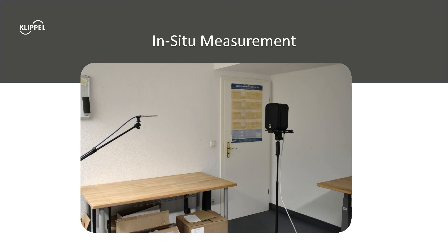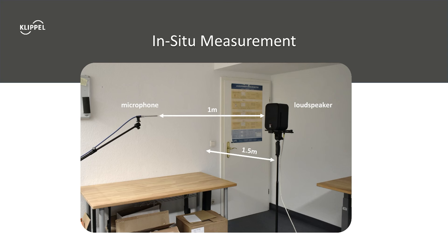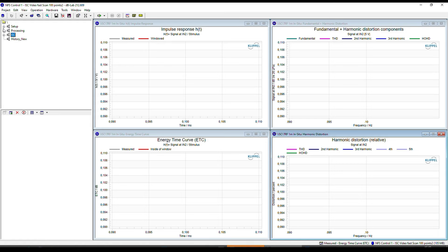Now it's time to set up the in-situ measurement. The equipment was moved to another room so the near-field scanner is free for other tasks. The speaker will be measured on axis at 1 meter distance. The loudspeaker and microphone are placed in the middle of the room to get the first reflection as late as possible. However, the room isn't quite big, so there is only 1.5 meters to the first wall. It can often be beneficial to do ground floor measurements, for example when your room is wide but has a low ceiling.